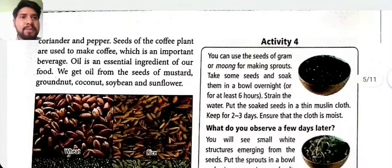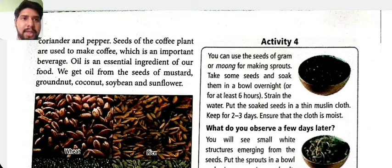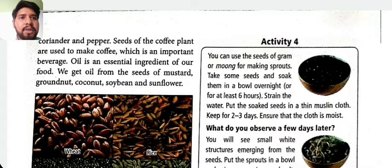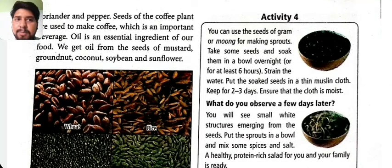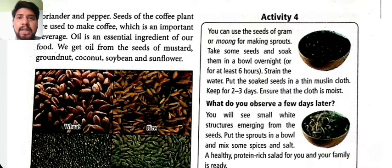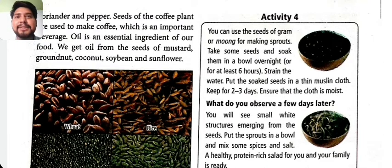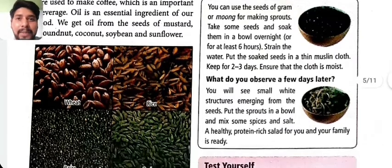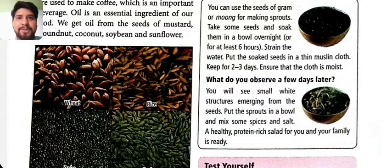Activity: Make sprouts at home using seeds of gram or moong. Soak some seeds in water overnight for at least six hours. Strain the water and put the soaked seeds in a thin cloth. Keep for two to three days, ensuring the cloth stays moist. After a few days, you will see small white structures emerging from the seeds. Mix the sprouts with spices and salt — a healthy, protein-rich salad is ready!